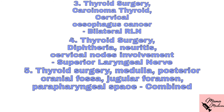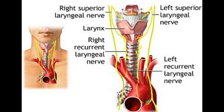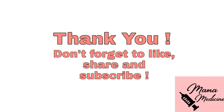Thyroidectomy, diphtheria, neuritis, and cervical node involvement denote superior laryngeal nerve paralysis. Thyroidectomy, or any cancer or infection in the medulla, posterior cranial fossa, jugular foramen, and parapharyngeal space denotes combined paralysis of both the superior and recurrent laryngeal nerves. To understand the etiology, you must understand the nerve routes: the right recurrent laryngeal nerve arises at the level of the subclavian artery and loops around it, so a subclavian artery aneurysm denotes right RLN paralysis, while an aneurysm at the arch of the aorta is more likely to damage the left RLN.